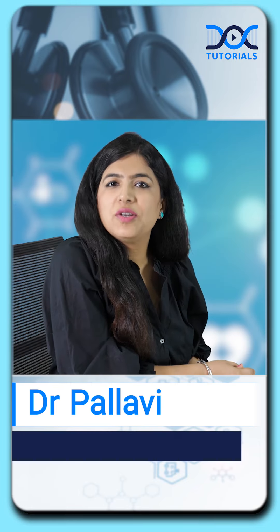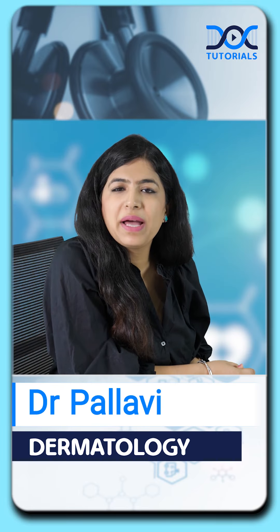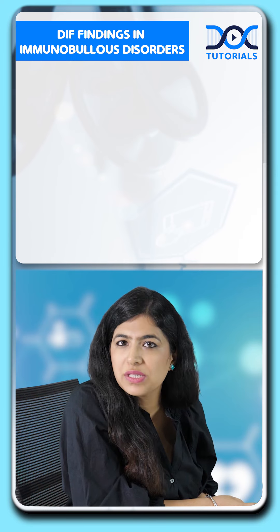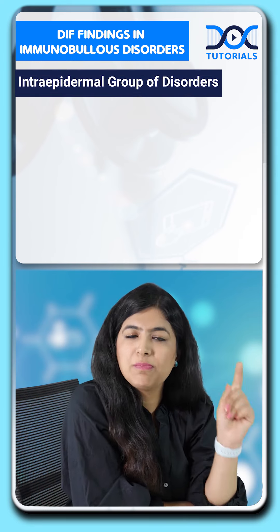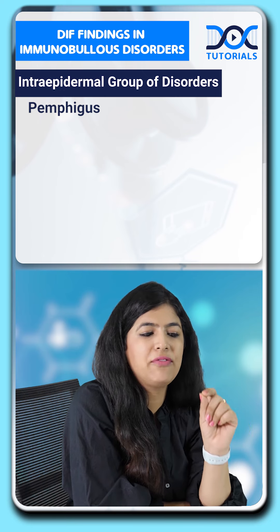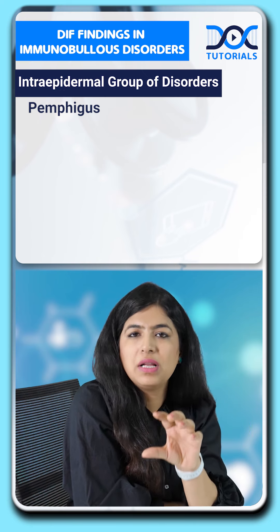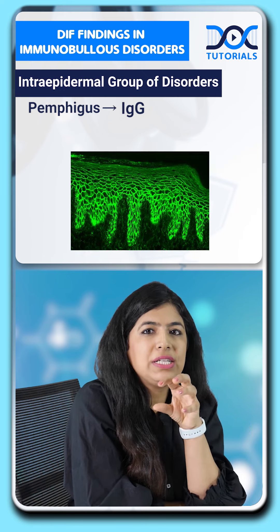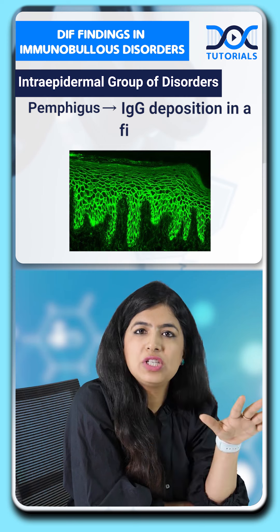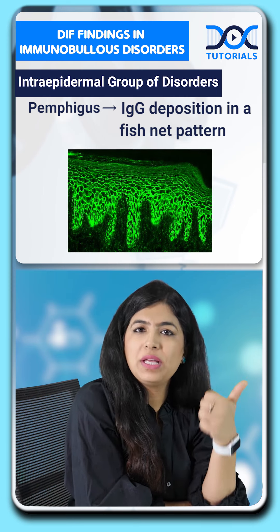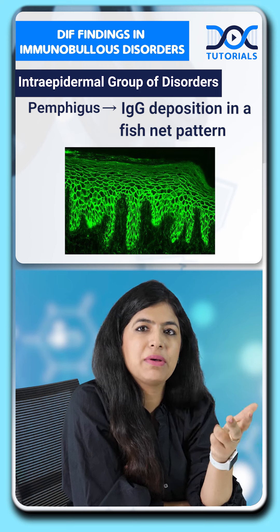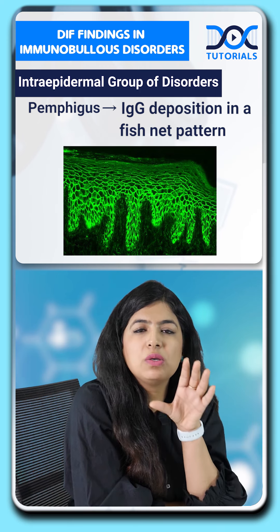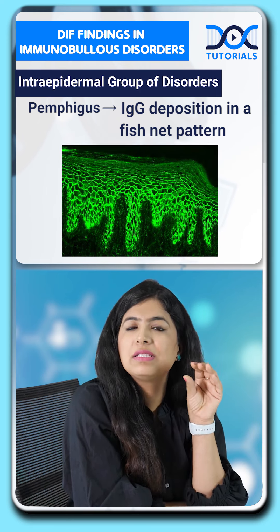Hello everyone. In today's quick learning bites, we'll be talking about the DIF findings in important immunobullous disorders. When we talk about the intraepidermal group — that is pemphigus — we have the intraepidermal IgG deposition in a fishnet pattern. Whether you have pemphigus vulgaris, foliaceus, or paraneoplastic pemphigus, the DIF findings will remain the same: a fishnet IgG intraepidermal deposition.